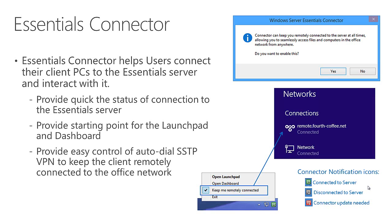The Essentials Connector has just a few things it allows you to do. When you right-click on the little green icon, you'll see a few options. This may be hidden as one of the optional icons in the notification area, so you may need to click the little up-arrow button to see it, and then you can choose whether it should show only notifications or show all the time.